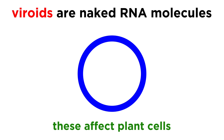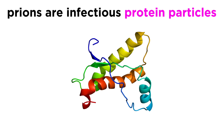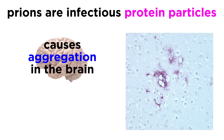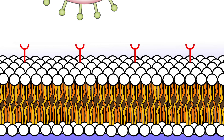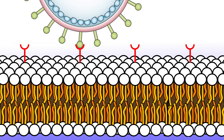There are even smaller infectious agents called viroids, which are naked circular RNA molecules that disrupt certain regulatory systems in plants, and prions, which have no genome but are instead infectious protein particles that cause other proteins in brain cells to aggregate and bring on disease symptoms, possibly including Alzheimer's and Parkinson's disease. It would seem that no cells are safe from viruses.